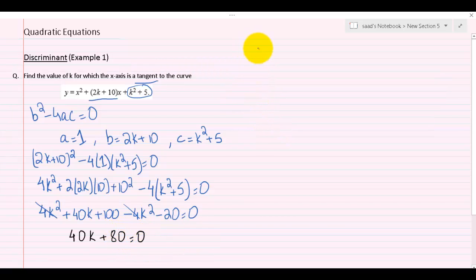Let's bring it here now. So I'll take 80 on the other side, which will give me 40k equals negative 80. Dividing both sides by 40 to get the value of k will give me k equals minus 2, which is our final answer.